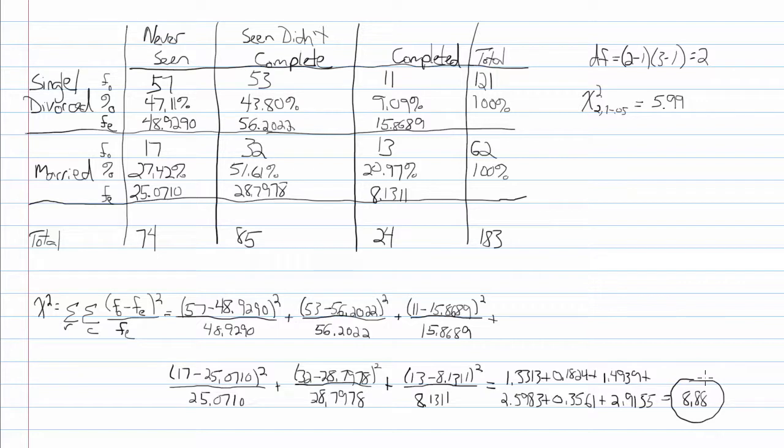Our observed Chi-Square value is 8.88. This value is larger than our Chi-Square critical value of 5.99. Therefore, we reject the null hypothesis and conclude that marital status is related to treatment completion.